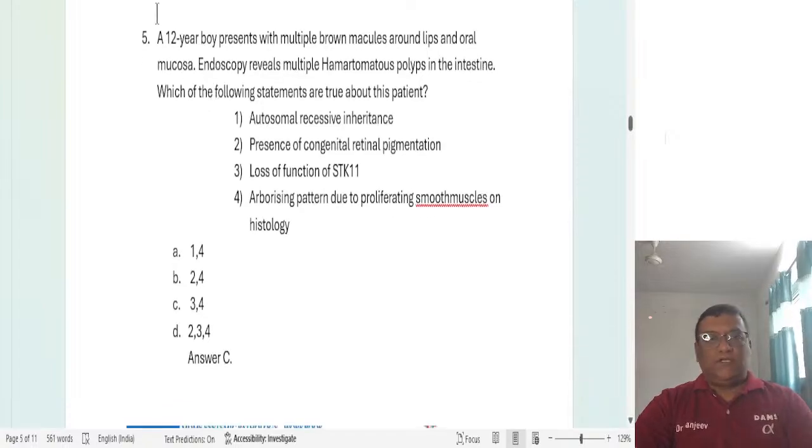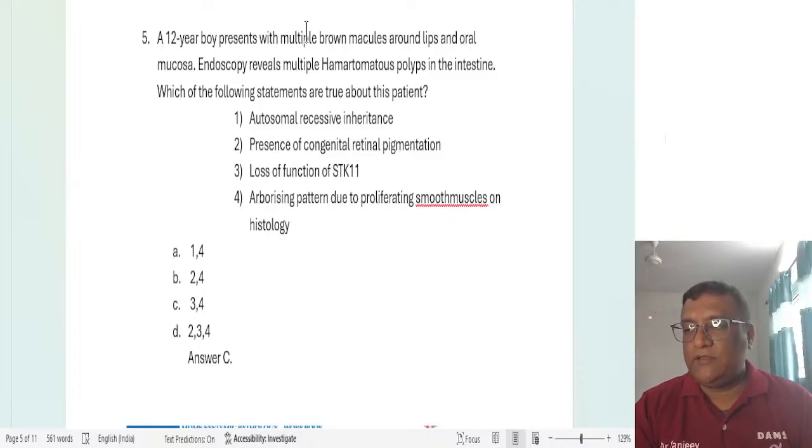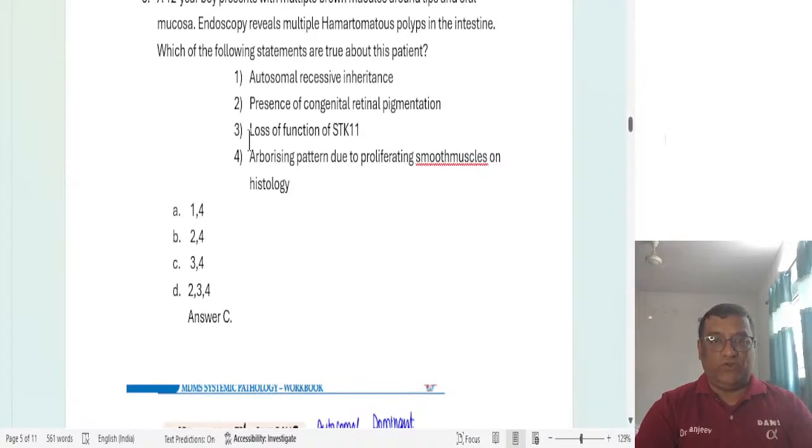Next question: A 12 year old boy presents with multiple brown macules around the lips and oral mucosa. Actually, this is a repeat question from previous year. We had discussed this in one of the TNDs and in the regular class as well. Endoscopy shows multiple hamartomatous polyps in the intestine. Which of the following statement is true about this patient? So what's your diagnosis here? Multiple hyperpigmentation in the oral cavity with polyps, hamartomatous polyps. Answer would be Peutz-Jeghers syndrome. Yes, correct. This is Peutz-Jeghers syndrome. It is a young child, Peutz-Jeghers syndrome. Autosomal recessive? No, it is autosomal dominant inheritance. That is wrong.